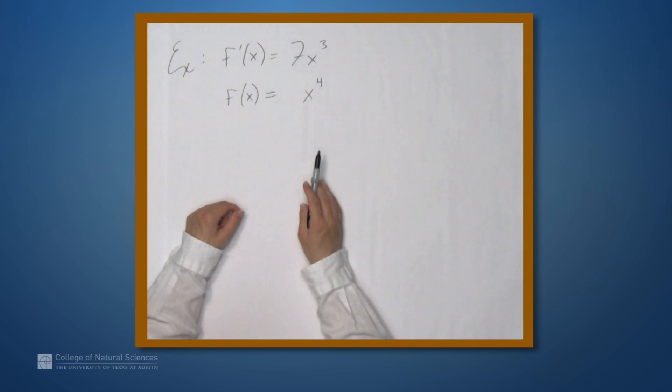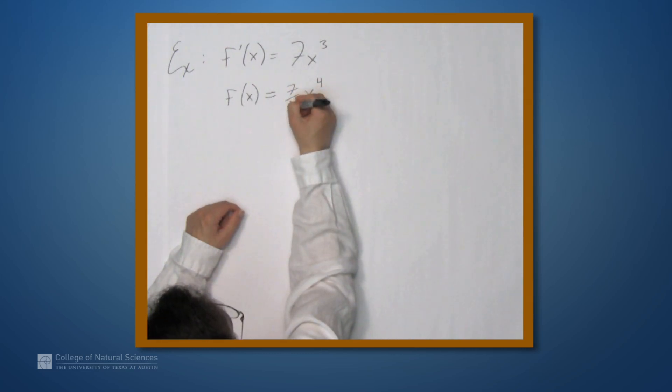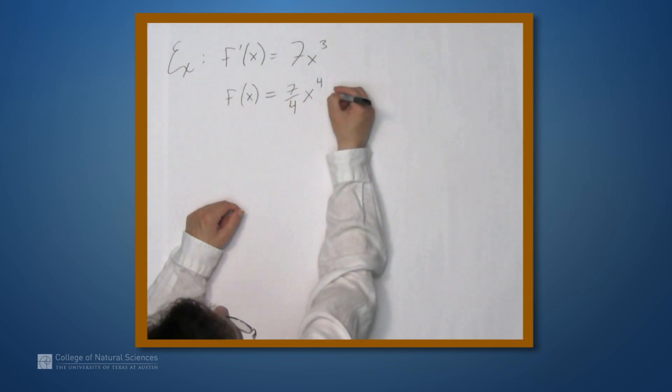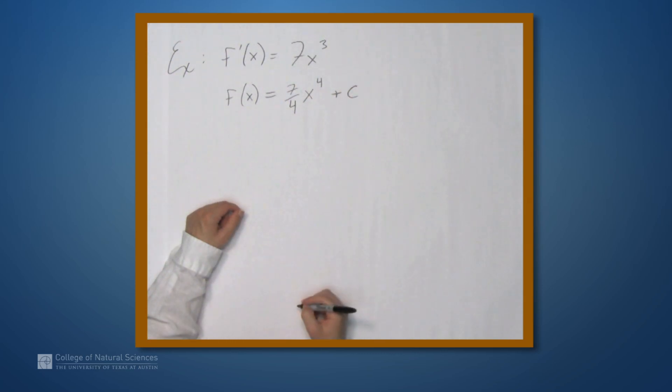In other words, we're looking for the number such that that number times 4 gives us 7. And that is 7 fourths. Right? The 4 comes down. 7 over 4 times 4 is just 7. And with the plus c, we see that f(x) is (7/4)x⁴ + c.